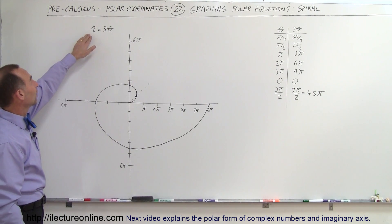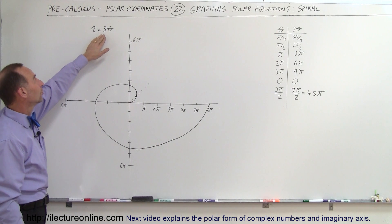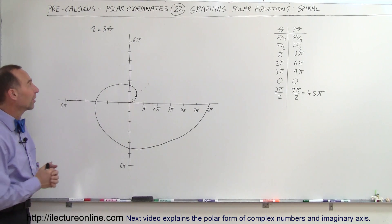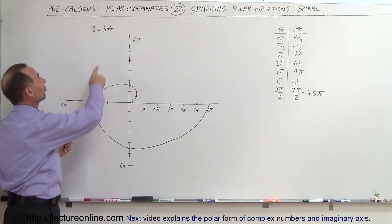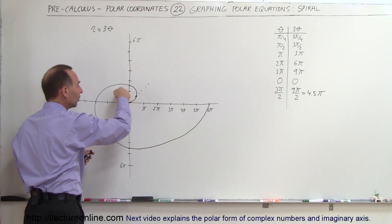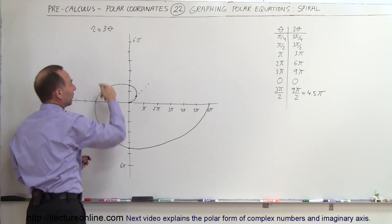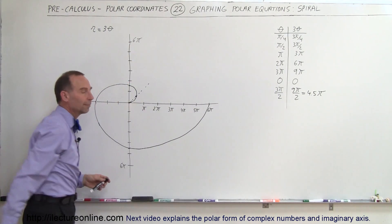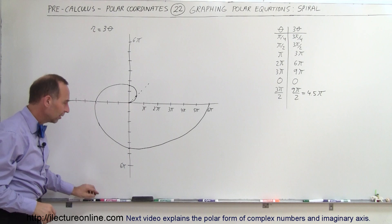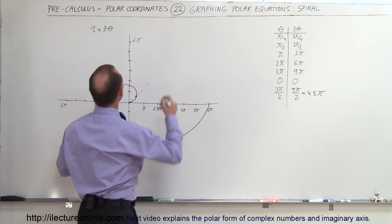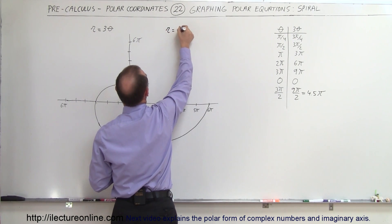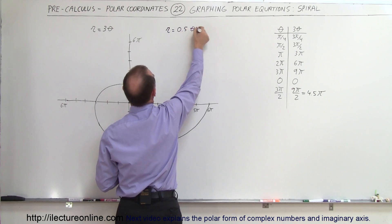In this case, we have r, the radius, equal to a number times the angle theta. And so if this is a very small number, then the spiral will increase very slowly like this. But if this is a very big number, then the spiral will go outward very quickly. So maybe just to illustrate that, let's try a different equation. Let's try r is equal to 0.5 times theta.